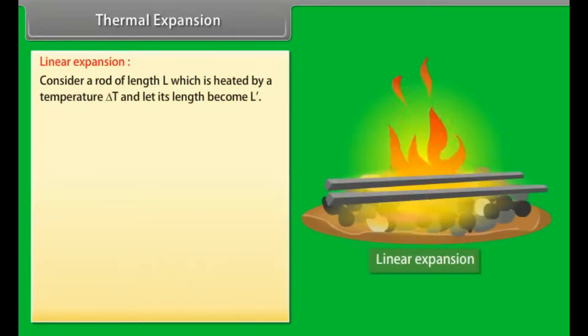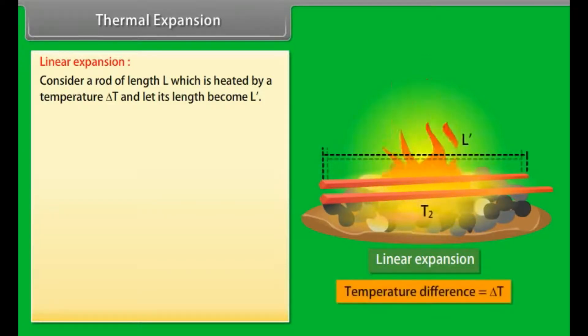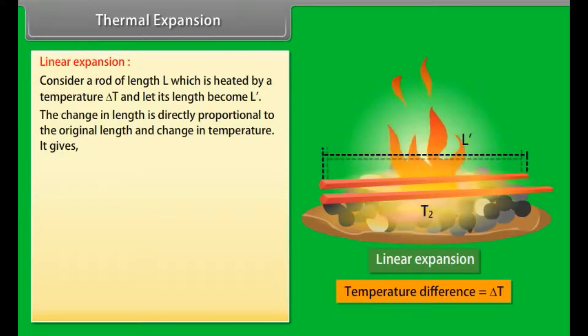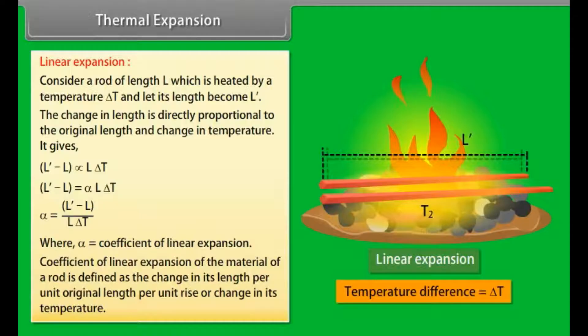Linear expansion. Consider a rod of length L which is heated by a temperature ΔT and let its length become L'. The change in length is directly proportional to the original length and change in temperature. It gives L' - L ∝ L ΔT or L' - L = α L ΔT. Value of α = (L'/L)/(L ΔT), where α = coefficient of linear expansion. Coefficient of linear expansion of the material of a rod is defined as the change in its length per unit original length per unit rise or change in its temperature.